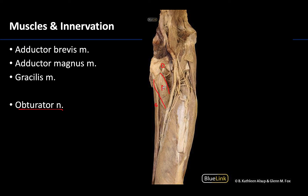This muscle is the adductor brevis. On this particular donor the adductor brevis is actually pretty robust — sometimes it is not as thick as what we see on this individual — but the placement of it will always be the same. So that is the adductor brevis.